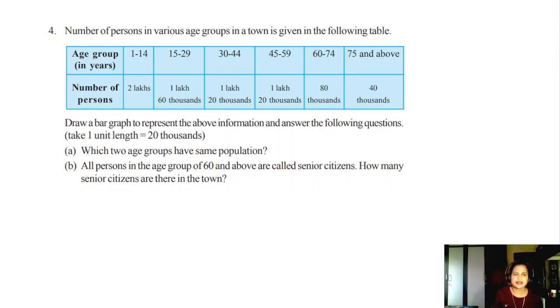Take one unit equal to 20,000. They are giving you the unit. Which two age groups have the same population? This is two, these two, this one and this one: 30 to 44 and 45 to 59. These two groups have 1 lakh 20,000, 1.2 lakhs. All persons in the age group of 60 and above are called senior citizens. How many senior citizens are there in the town? Now you have to add these two, because above 60 means 80,000 plus 40,000. How much is it? 8 plus 4 is 12. It is 1 lakh 20,000. This is the answer for this.